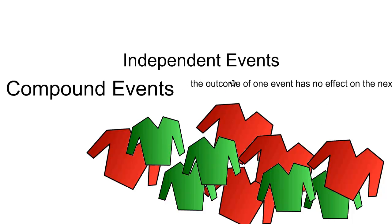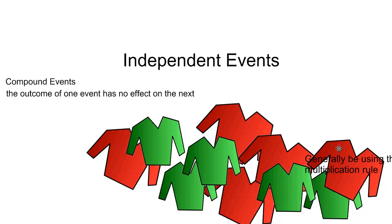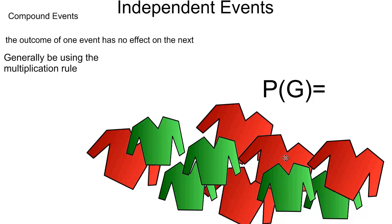The outcome of one event has no effect on the outcome of the next. Generally speaking with independent events, you're going to be using the multiplication rule to find out the probability of any one outcome—you're going to be multiplying the probability of each step in the compound event. If I was interested in finding out what the probability of selecting green was from this selection of cardigans...